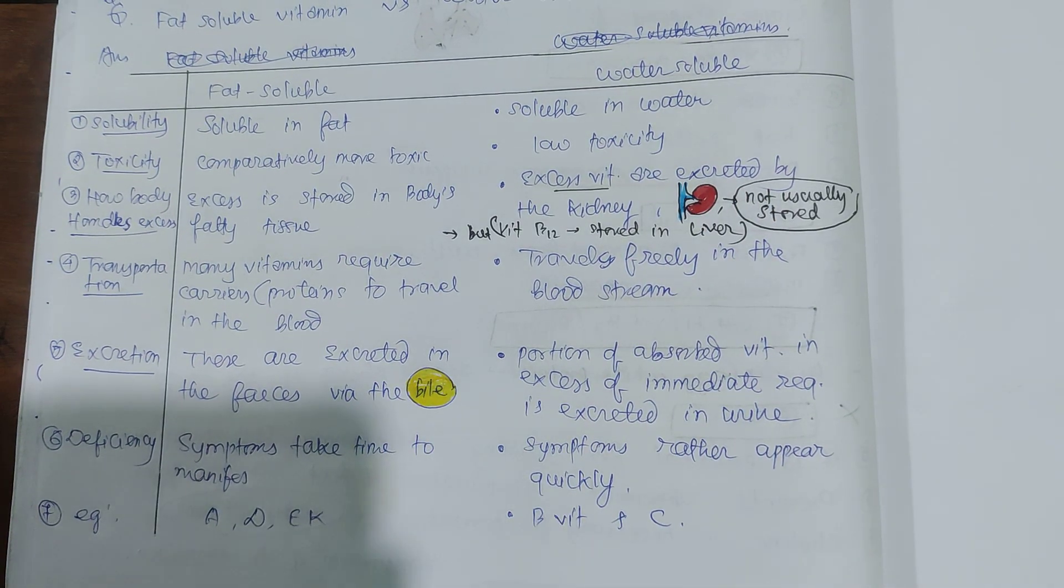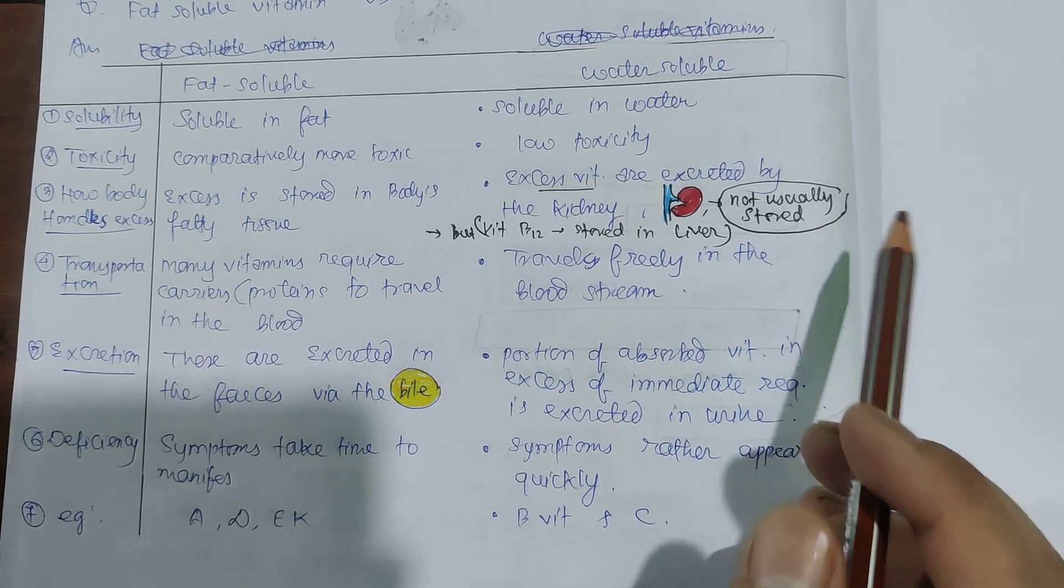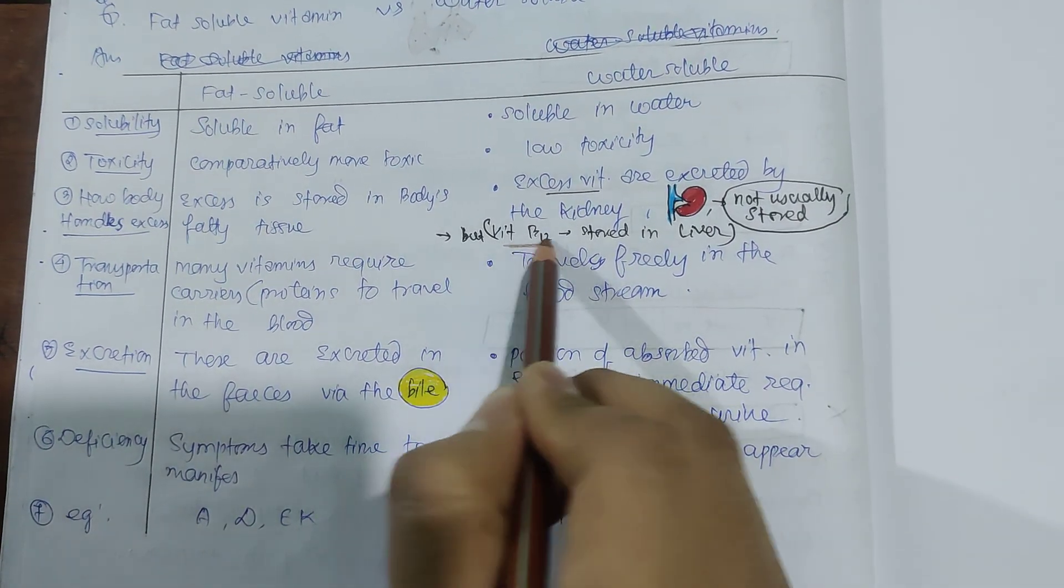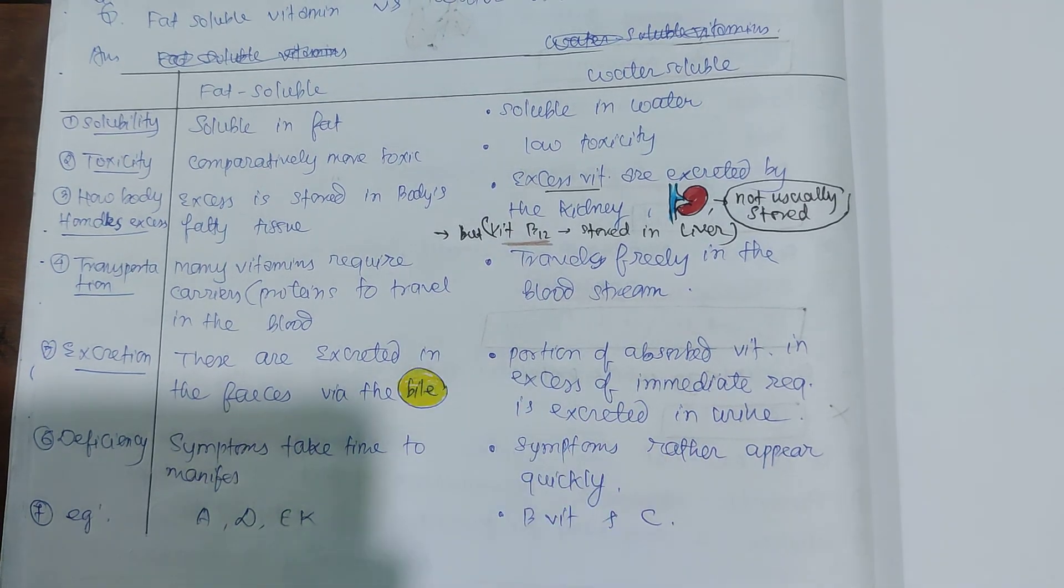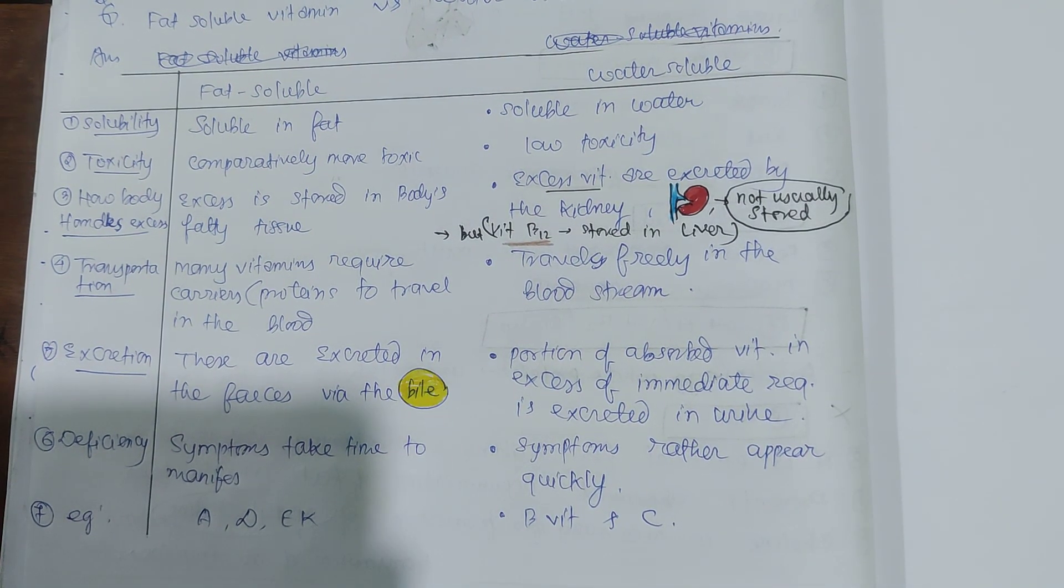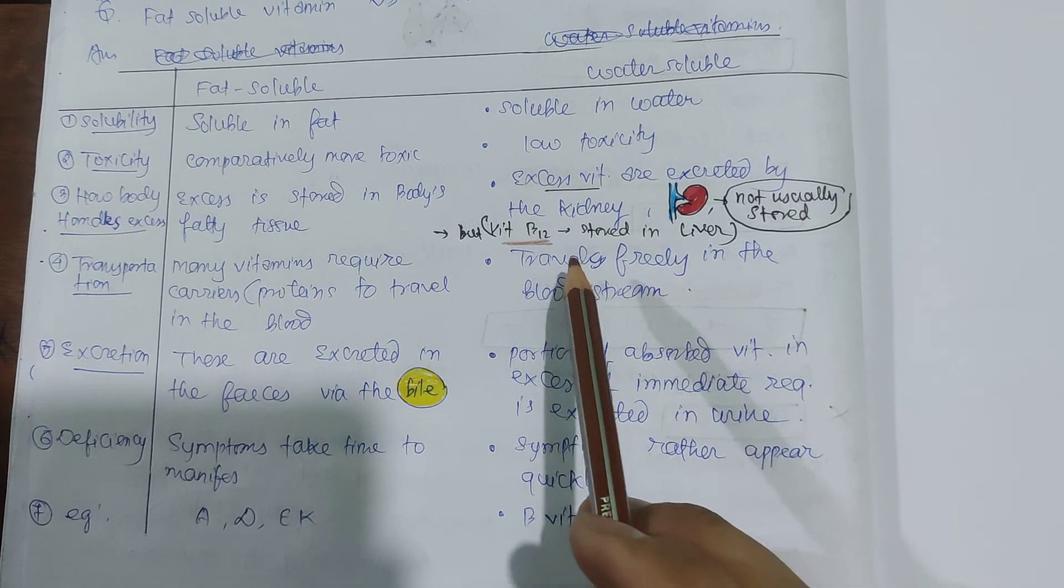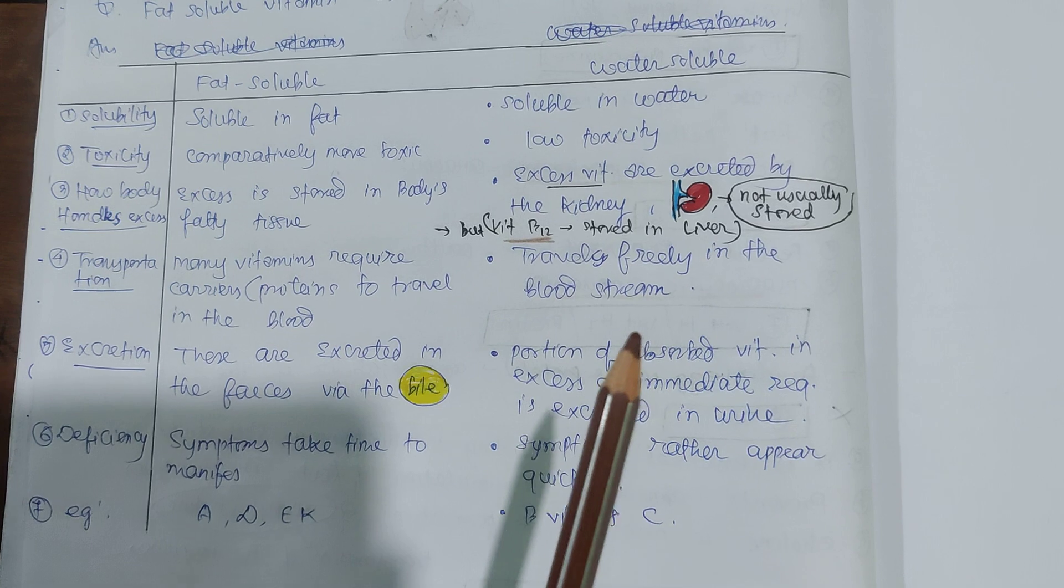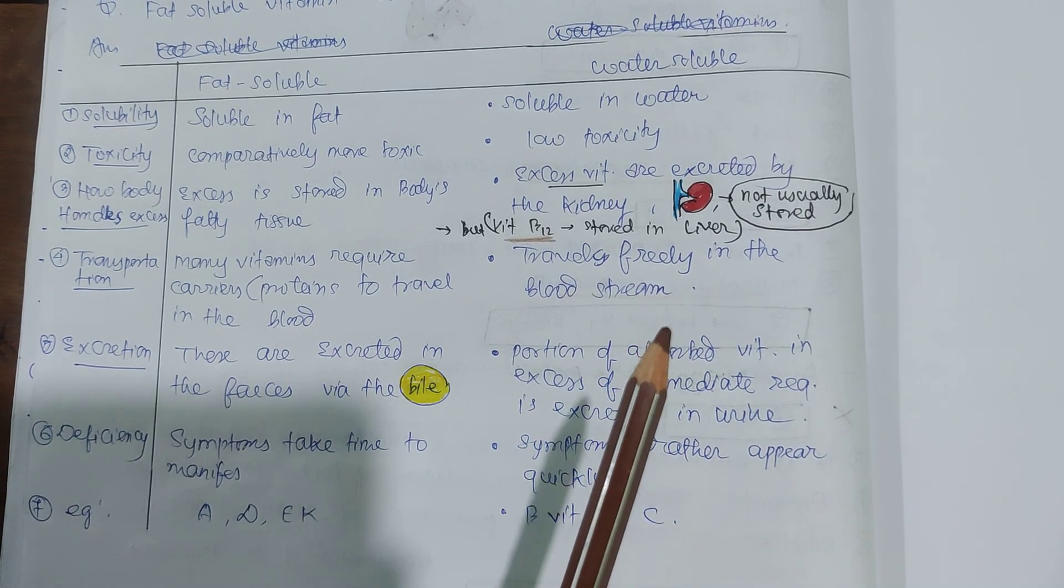But there is an exception: vitamin B12. Vitamin B12 is stored in the liver. That's why vitamin B12 is usually present, and you need more amounts of different B vitamins and vitamin C in the diet.